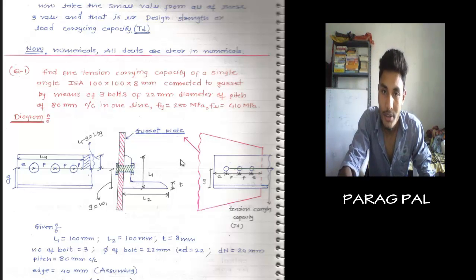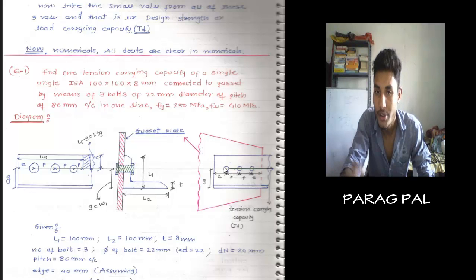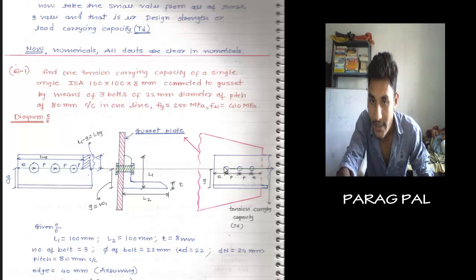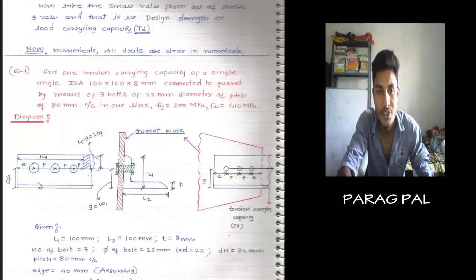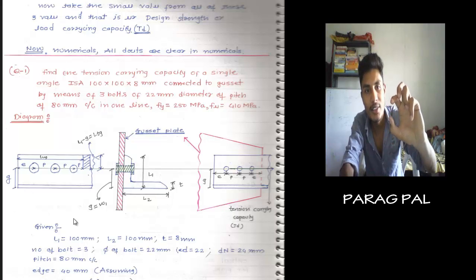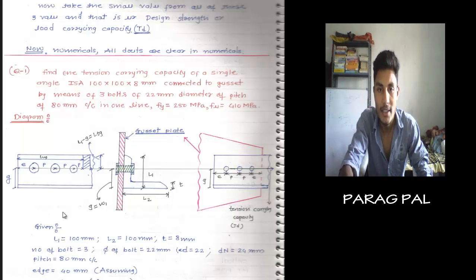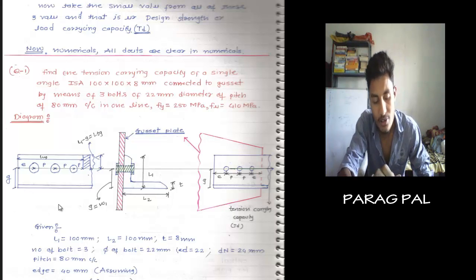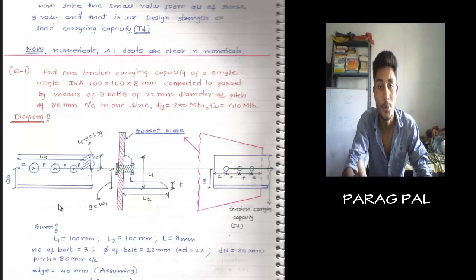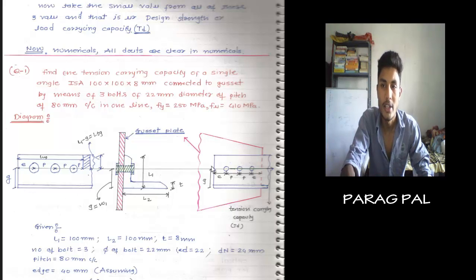All diagrams are shown here. This is the gusset plate. This is the angle connected by 3 bolts, having the proper pitch and end connection. LVG and cross-sectional area are given. G is the distance from the bottom to the center of the bolt. There are formulas for all of these. If pitch, edge distance, and G are not given, then you use the formulas: edge distance is 2.5 into D, and G equals 0.6 into L1.